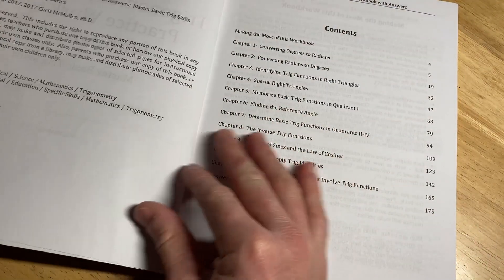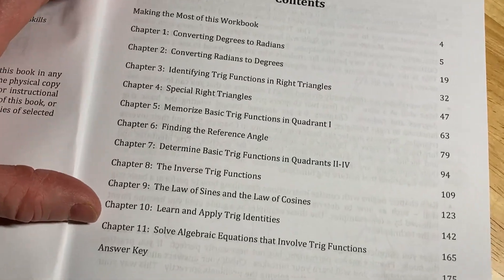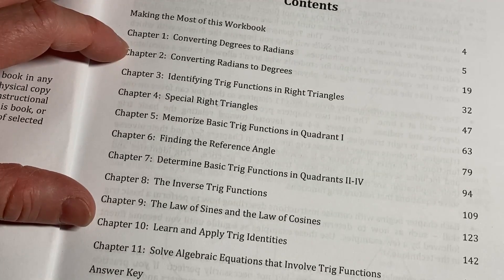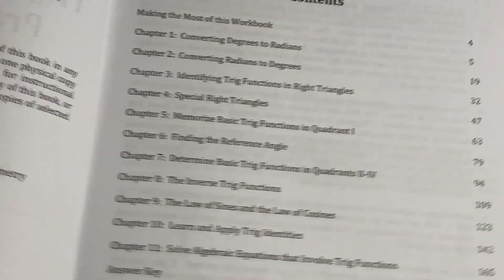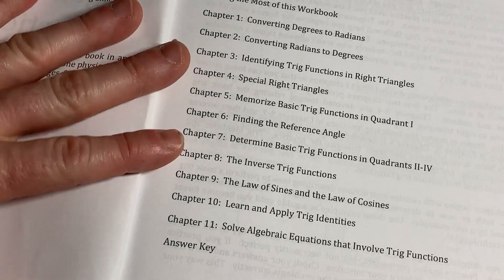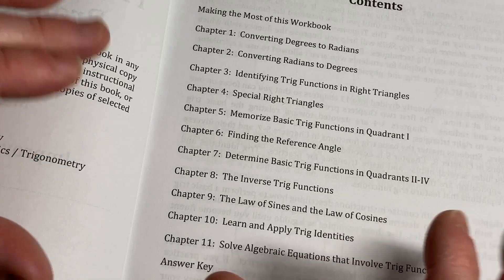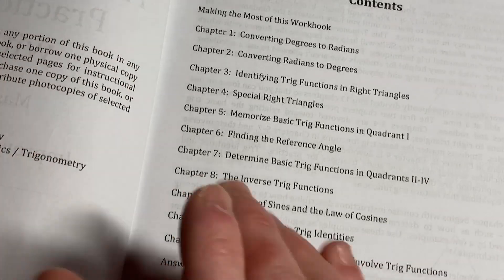Now, the topics in this book are very specific, and I think that this is one of Chris McMullen's best books. Let's check the copyright here. Copyright 2012 and 2017. I think this is one of his best books because he covers some easy topics, but he also covers some of the harder ones, and I like how he does it.